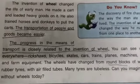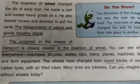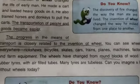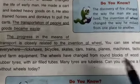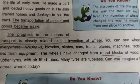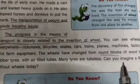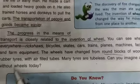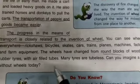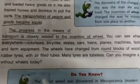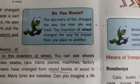The progress in the means of transport is closely related to the invention of the wheel. We can see wheels everywhere — rickshaw, bicycle, skates, cars, trains, planes, machines, factory equipment. The wheel has changed from round blocks of wood to rubber tires with air-filled tubes. Many tires are now tubeless. Can you imagine life without wheels today?